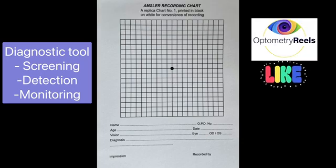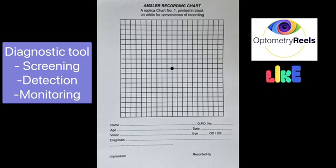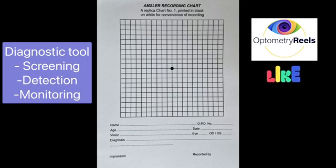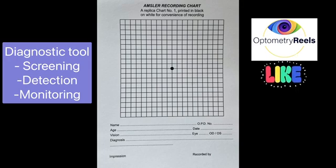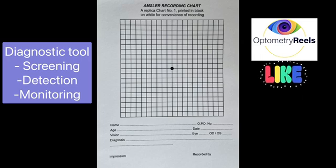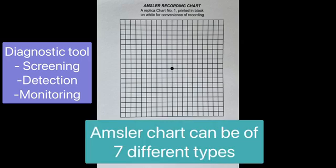It is a diagnostic tool that is mainly used in the screening, detection, and monitoring of macular diseases. It can also be used to detect diseases of the optic nerve and visual pathway. There are seven different types of Amsler chart.